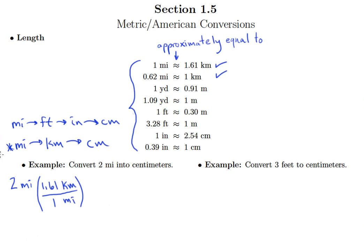My miles will cancel. I can multiply these, and what I get is that two miles is equal to 3.22 kilometers.